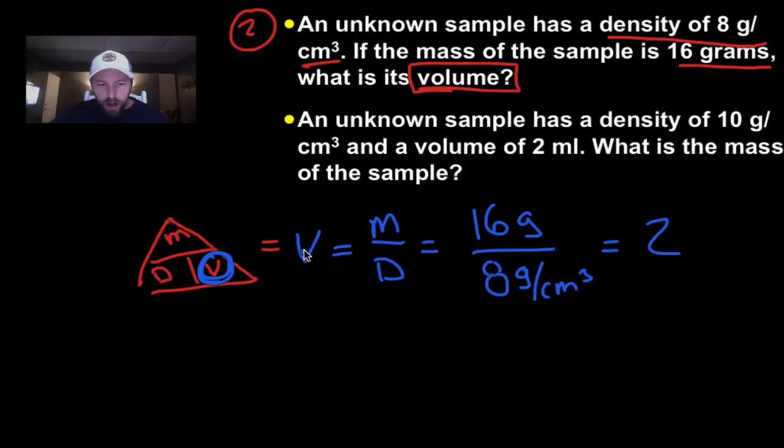Now, our volume, we just have to make sure we get our units. Well, grams right here, they're going to basically cancel out. Grams is a unit of mass. And we're going to be left with centimeters cubed. It's a little bit of a spin on a typical density problem. But you can see, if you work through it, nice and easy, start with the triangle. Cover up what you need.